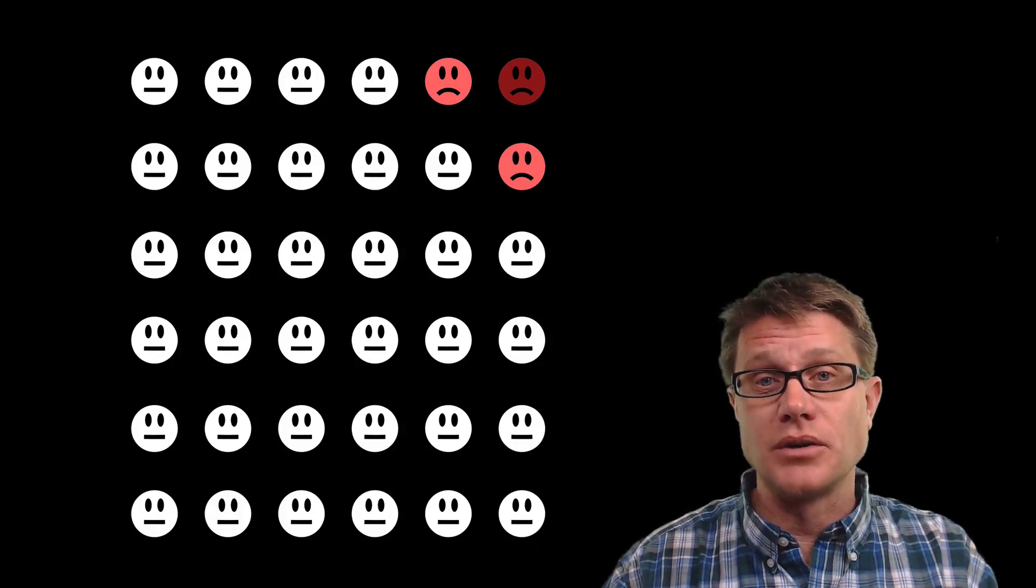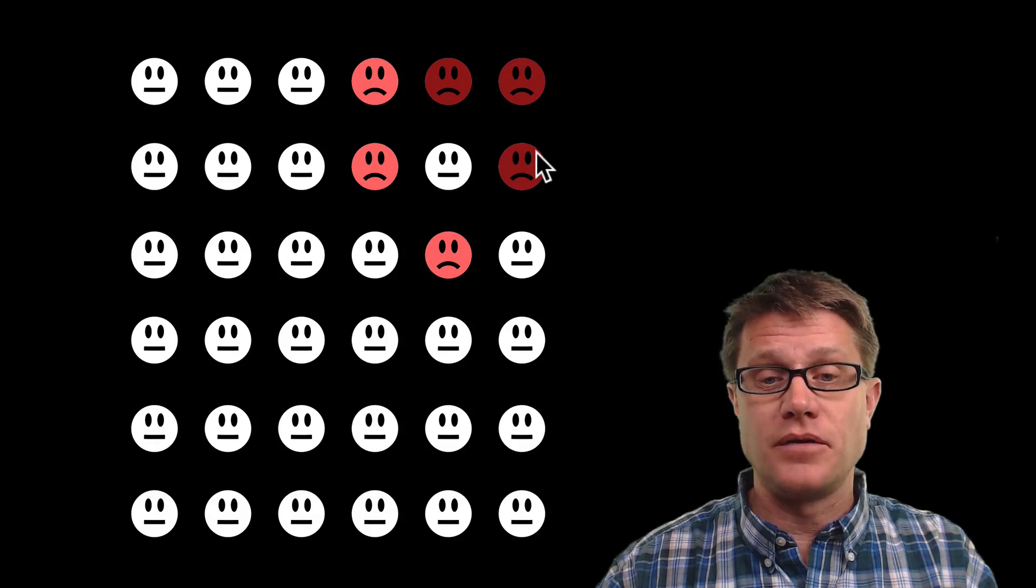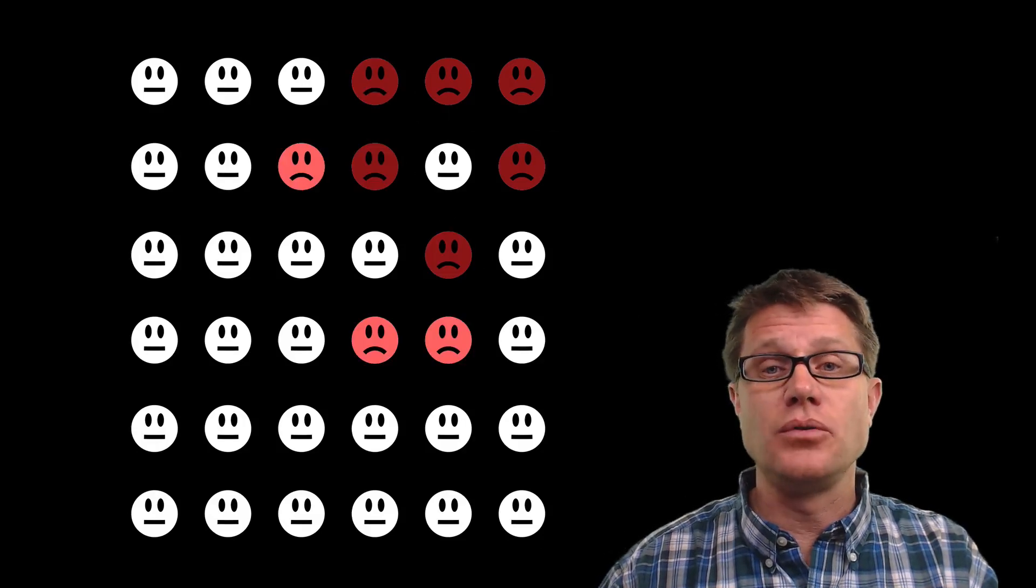I then took those individuals and flipped coins for the people around them. And this person, for example, infected one individual. And this person infected two. And then I just keep doing that over and over. And you can see how the disease spread through the population.